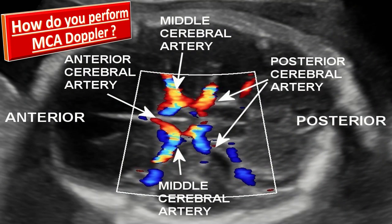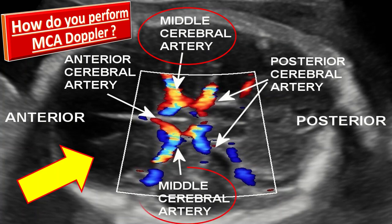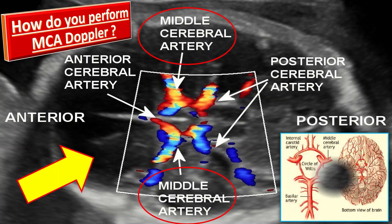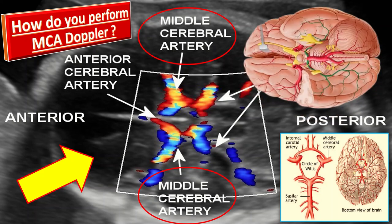How do you perform the MCA Doppler? In this picture you can see the circle of Willis and the middle cerebral artery. The middle cerebral artery is examined close to its origin from the internal carotid artery. Using color Doppler flow imaging, the MCA can be seen as a major lateral branch of the circle of Willis, running anterolaterally at the borderline between the anterior and middle cerebral fossa. The MCA Doppler is done to assess the resistance in fetal brain vasculature.